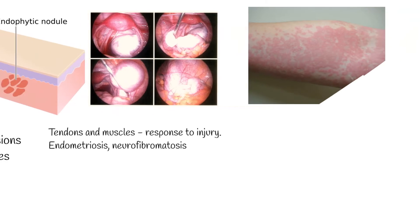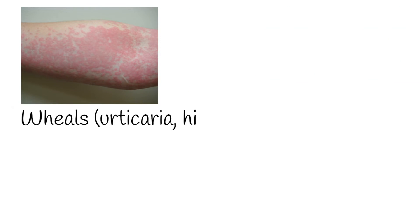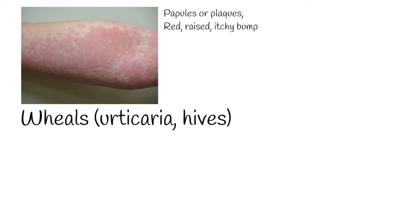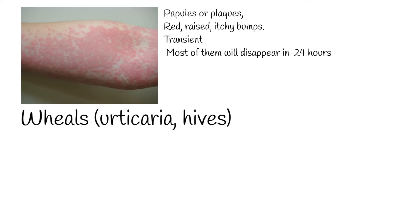Wheals — also called urticaria or hives — are papules or plaques with red, raised, itchy bumps. They are pink-colored and transient. Most will disappear in 24 hours, and fewer than 5% of cases last for more than 6 weeks. Hives frequently occur following an infection or as a result of an allergic reaction.